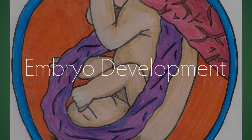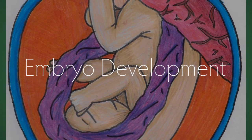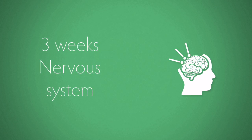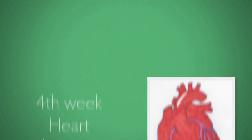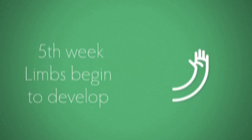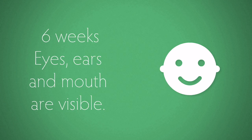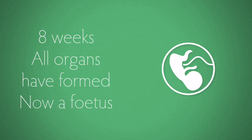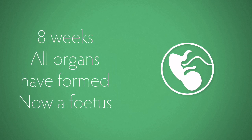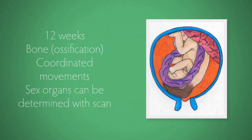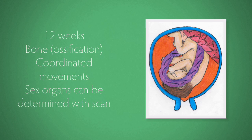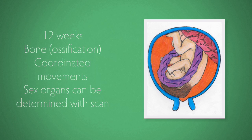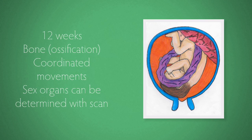You have to give an account of embryo development up to week 12. By week 3 the nervous system has formed. By week 4 the heart is beating. By week 5 limbs begin to develop. By week 6 eyes, ears and mouth are visible. By week 8 all the organs have formed and the embryo is now called a fetus. By week 12 the bones are almost fully formed — cartilage has been replaced by hard bone so ossification is complete — there are coordinated movements, and the sex organs can be determined with a scan.